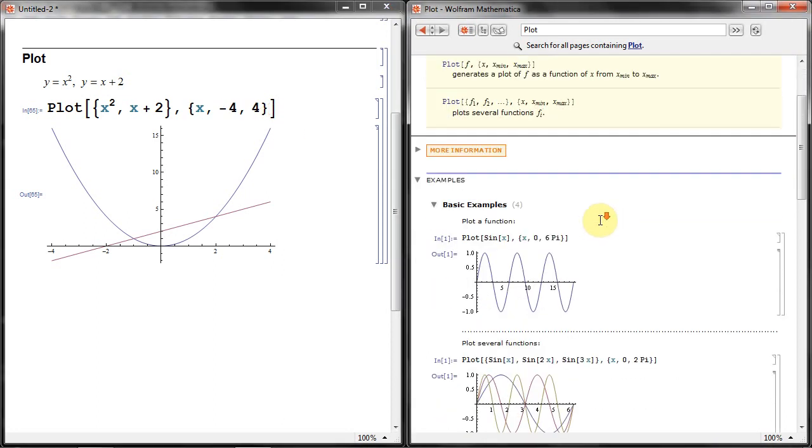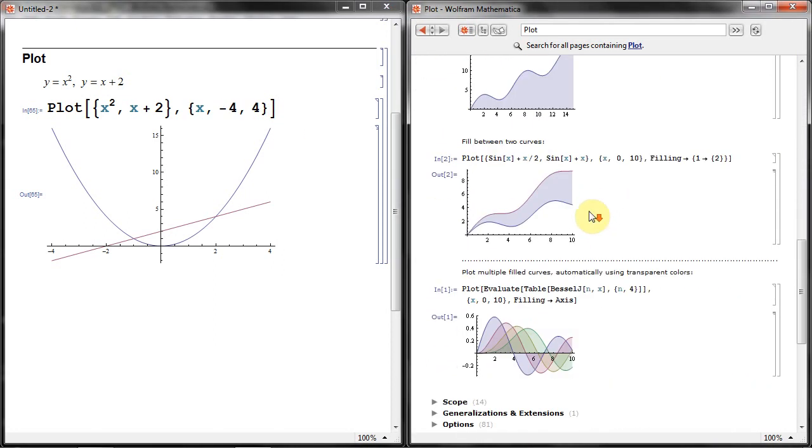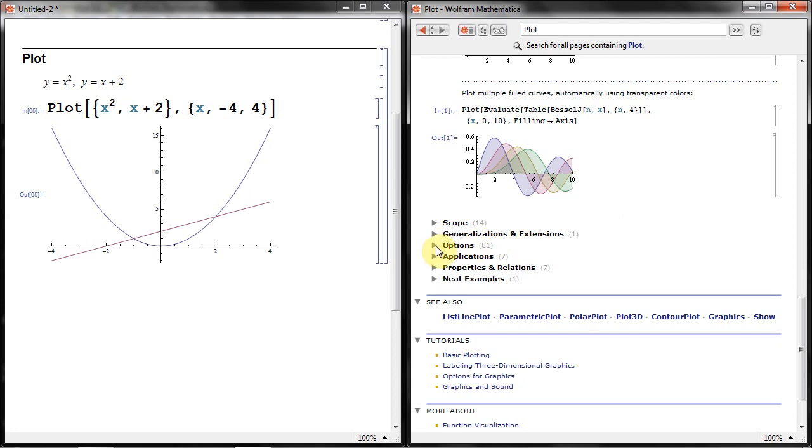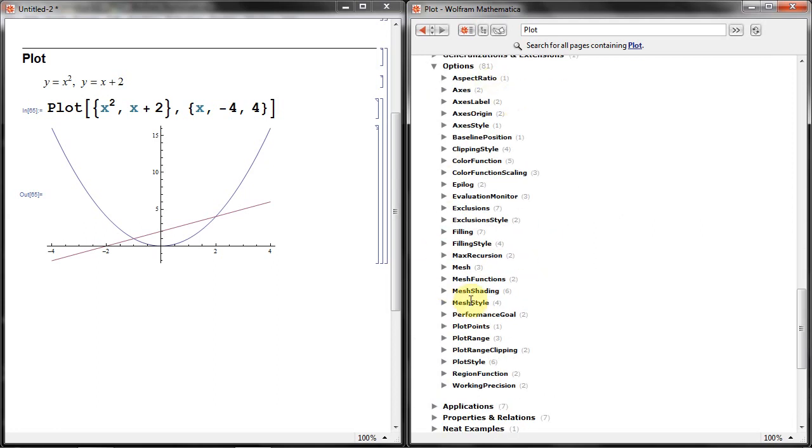Now, on the help file, if you come further down, there's a little thing here that says options. And these are all the options, and I think there's more than this. But these are all the options you can attach to this plot function here.